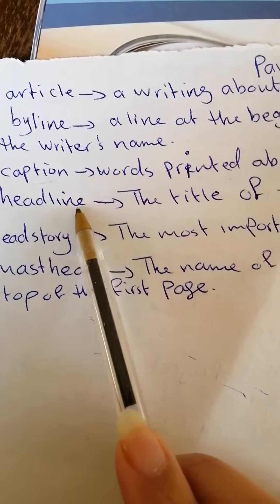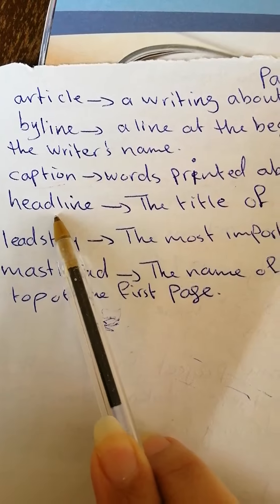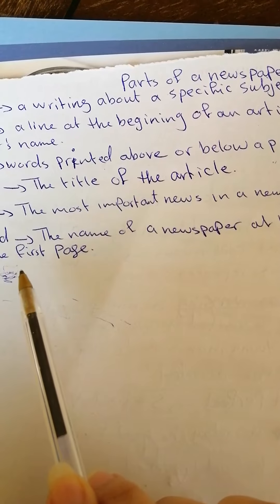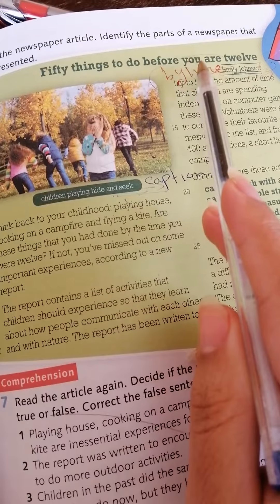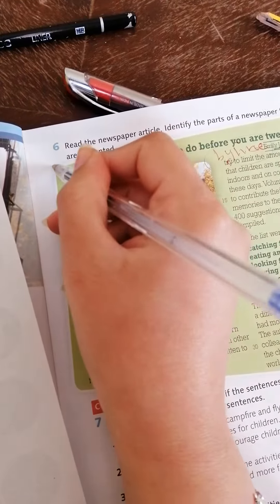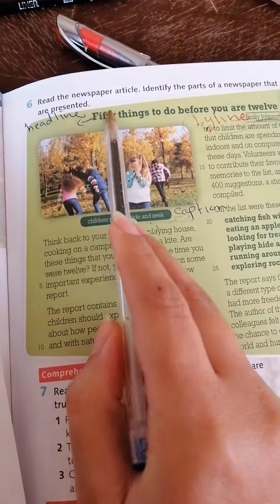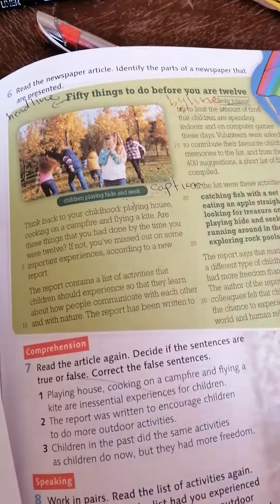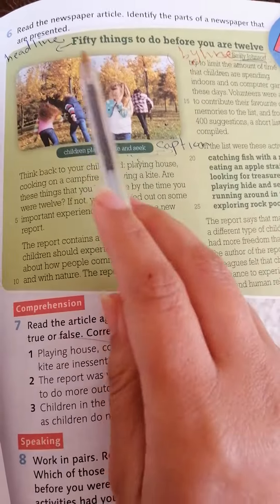We have something called 'headline.' Headline — head meaning main — so the main line, or main story. This means the title of the article. What is the headline of this article? '50 things to do before you are 12.' So this is the headline — the byline, the caption, and this is an article. The headline is mainly the title of an article.